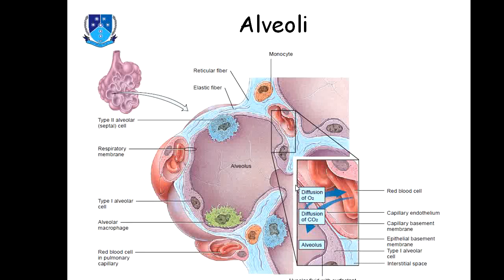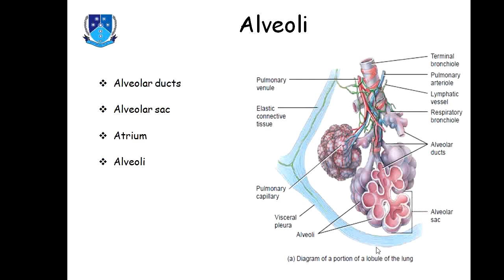Each alveolus leads to the atrium, and the atrium leads to the alveolar duct. Each compartment or lumen of the alveolus leads to the atrium, each atrium leads to the alveolar duct, and each alveolar duct leads to the respiratory bronchiole, and each respiratory bronchiole leads to the terminal bronchiole, and each terminal bronchiole leads to the bronchi.